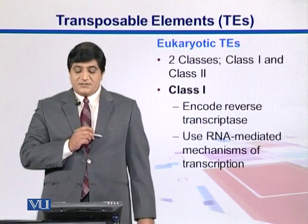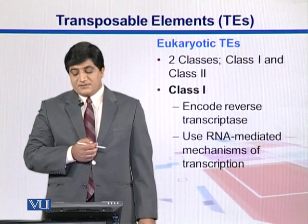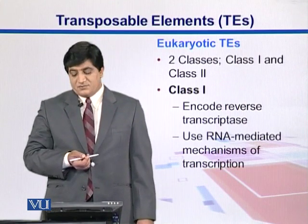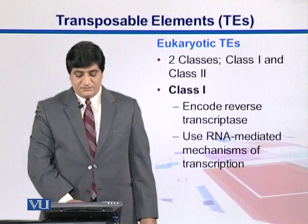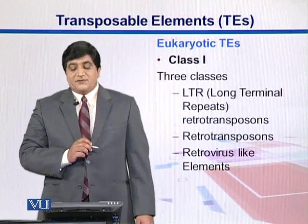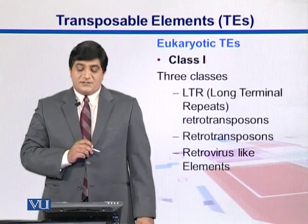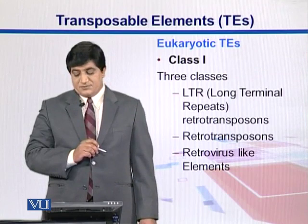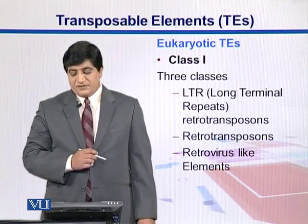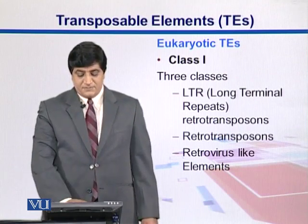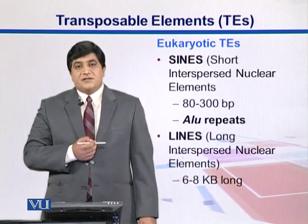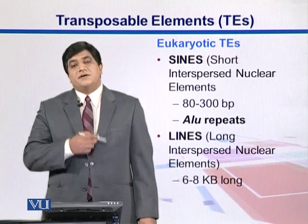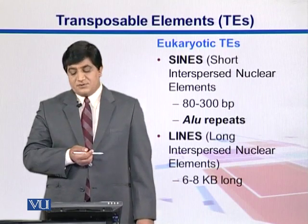Eukaryotic transposable elements have two classes. Class 1 elements have reverse transcriptase and an RNA-mediated mechanism of transposition. Class 1 can be categorized into LTR retrotransposons, non-LTR retrotransposons, and retrovirus-like elements. SINEs and LINEs, as seen earlier, are present in the non-LTR retrotransposon category.